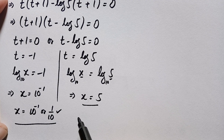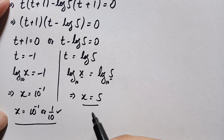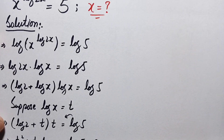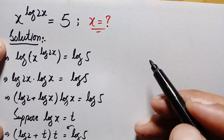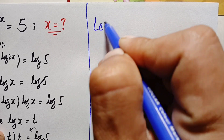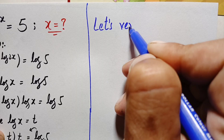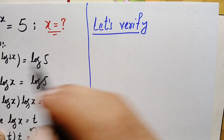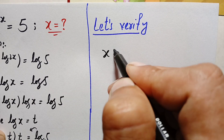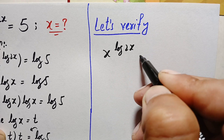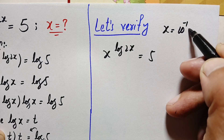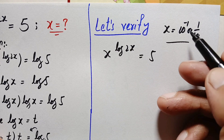Now, are these the exact and correct solutions? We will verify both values of x. Let's verify by writing our original problem again: x raised to power log(2x) equals 5. First, let us verify x = 1/10.